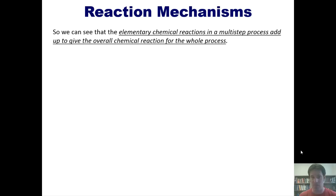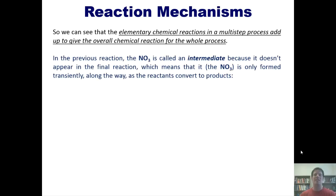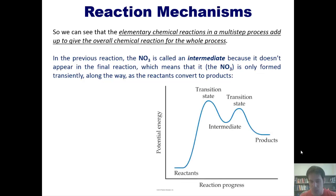Now, I've got a couple of tips I have to tell you. In this previous reaction, you'll notice that NO3 was canceled out. That is called an intermediate because it doesn't appear in the final reaction, but does appear in some of the elementary steps. This means that NO3 is only formed transiently along the way as reactants convert to products. I'll show you that by using this cool energy diagram where we see the reactants NO2 and CO here at the left, the product NO and CO2 here at the right, and this intermediate NO3 being this valley right in the middle.